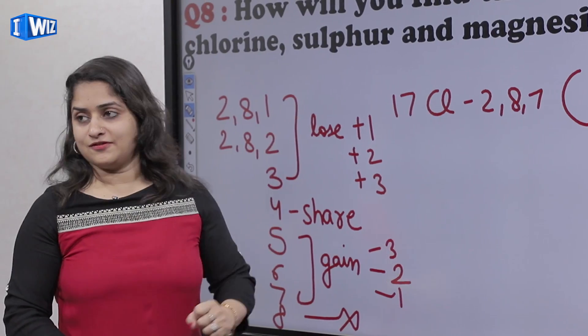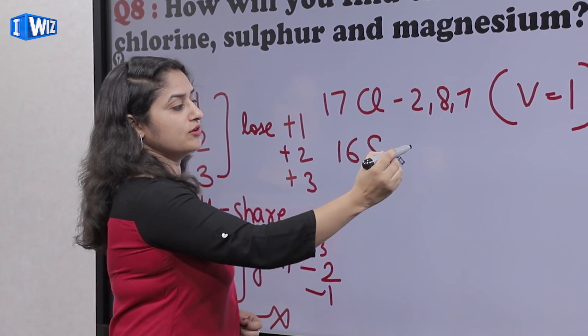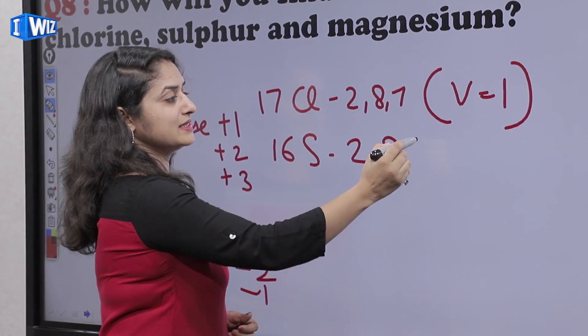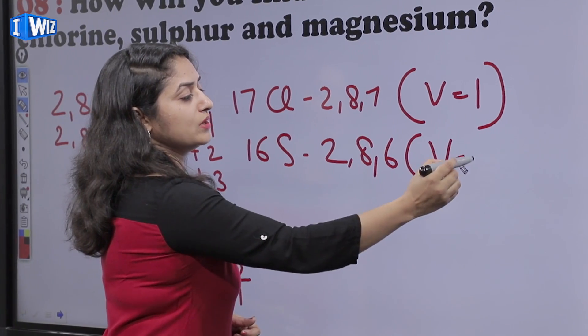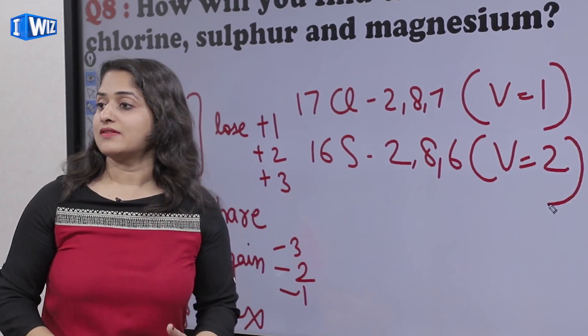Next, sulphur hai. Sulphur is sixteen. Uski configuration hai two, eight, six. Octet se do electrons kam, toh uski valency hoogi two.